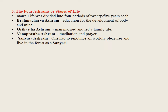The Four Ashrams or Stages of Life: A man's life was divided into four periods of 25 years each, each period representing one ashram. The Brahmacharya ashram was mainly devoted to education for development of body and mind. The Grihastha ashram was the period when a man married and led family life. The Vanaprastha ashram was spent in meditation and prayer. The last phase was the Sannyas ashram, when one renounced all worldly pleasures and lived in the forest as a sannyasi.